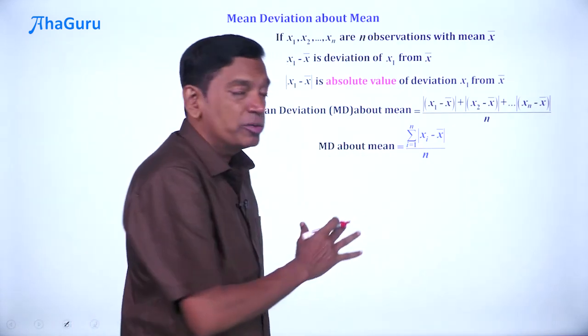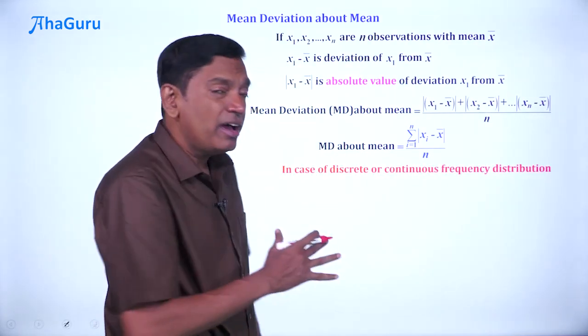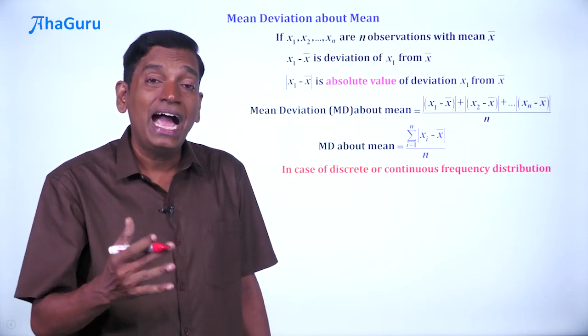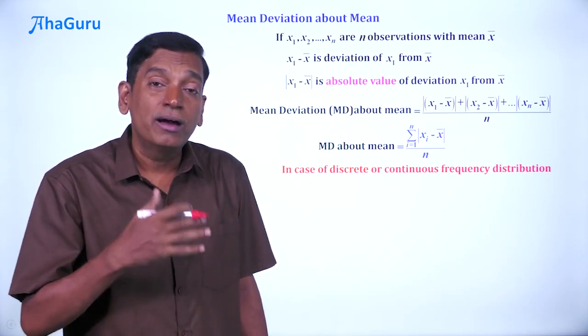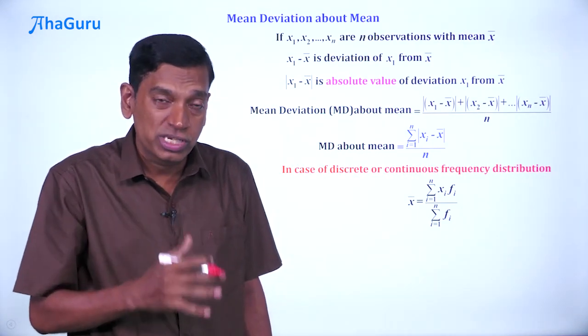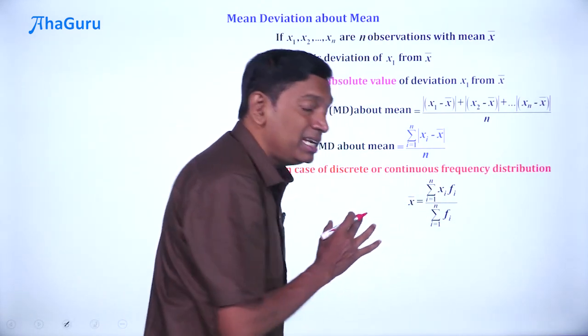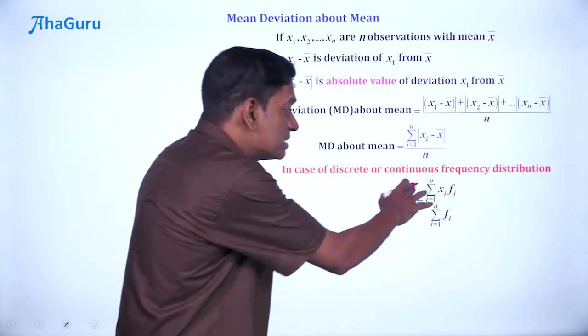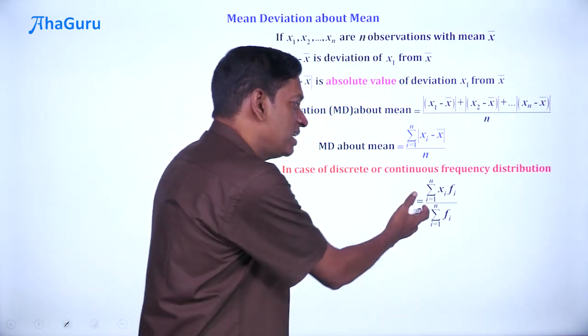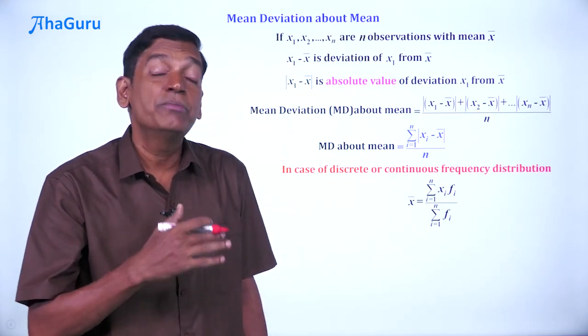So this is the MD about mean if the data that we have is x1, x2 till xn. Now, what if you have a discrete or continuous frequency distribution where you are given x1, x2 till xn and their corresponding frequencies? Then, how would we compute the mean deviation? Well, the first thing is, we know that the x̄ for such a distribution is Σxifi / Σfi. Now, please understand that the small n denotes the number of xi's. This Σfi is sometimes denoted by capital N, but we have just retained it as Σfi in this particular formula. So this is the x̄.